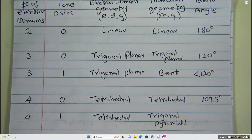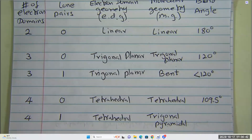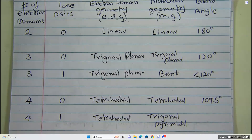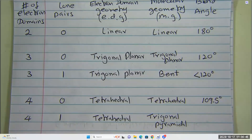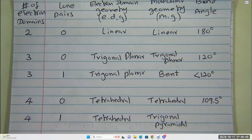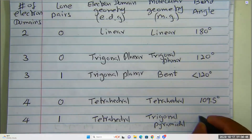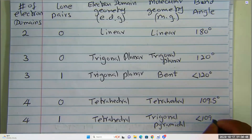The bond angle — again, the bond angle is primarily determined by the electron domain geometry, which is tetrahedral. It has to do with 109.5 degrees. But because that lone pair takes up more space, that angle will be a little bit pinched. Therefore this bond angle will be a little bit less than 109.5 degrees.